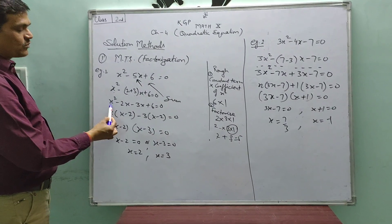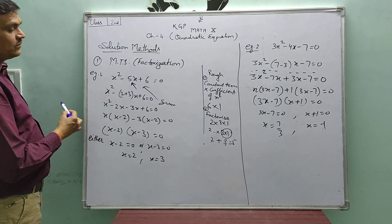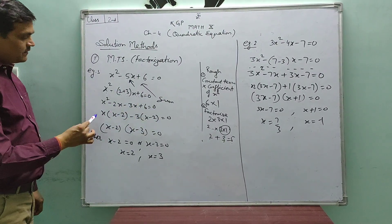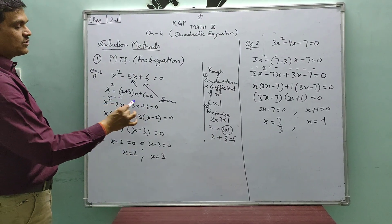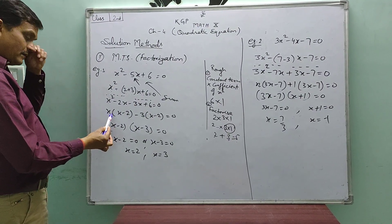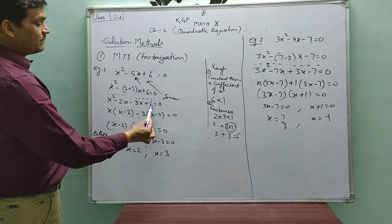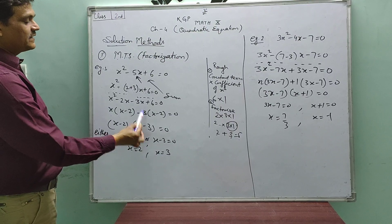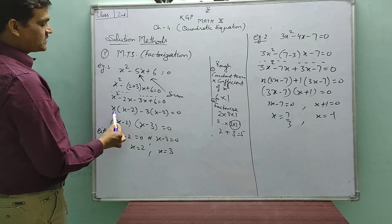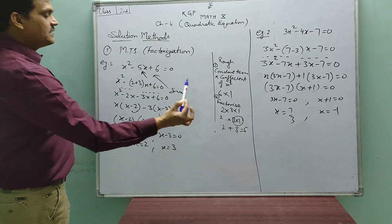Now we open the bracket: x squared minus 2x minus 3x. We have to keep attention on the minus sign. Plus 6 equals to 0. Now we take pairwise common from these four terms. From the first two terms, x is common, giving x minus 2. From the last two terms, minus 3 is common, and the left part is also x minus 2. So: x(x minus 2) minus 3(x minus 2) equals to 0.